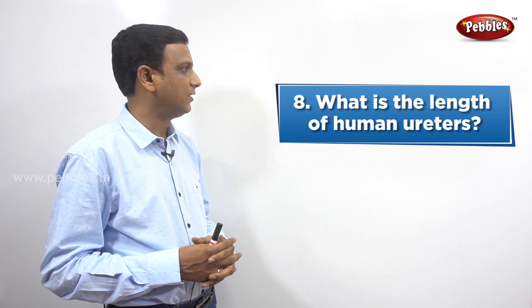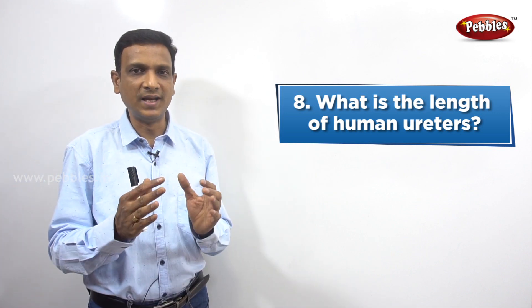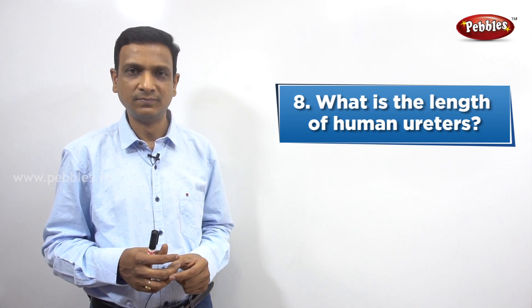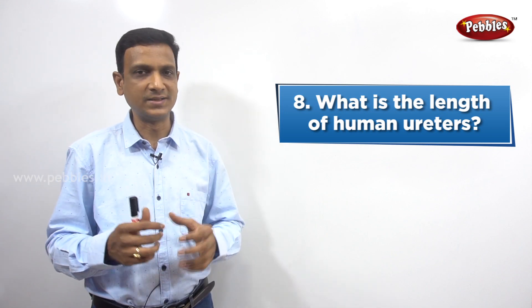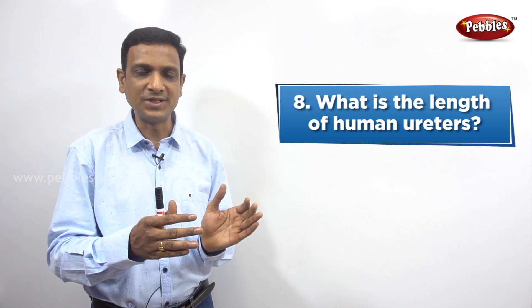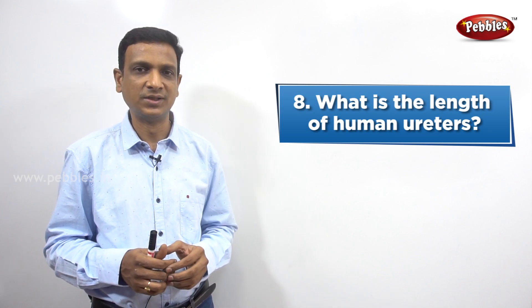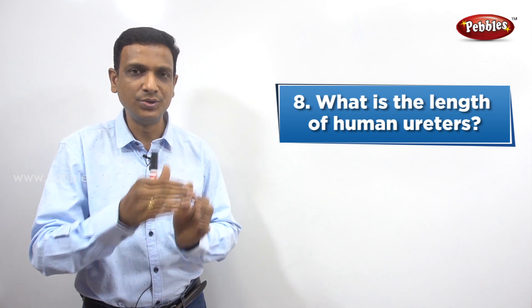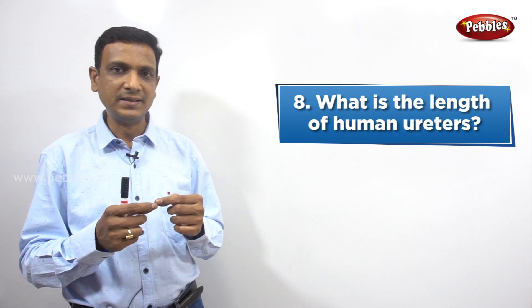The eighth question: what is the length of human ureters? A ureter is a tube that connects the kidneys to the urinary bladder — it is a part of the excretory system. Whatever urine is formed in the kidney has to be passed to the urinary bladder, where it is stored temporarily before excretion. The urine is carried from the kidneys to the urinary bladder via the ureters. They are thin muscular tubes.